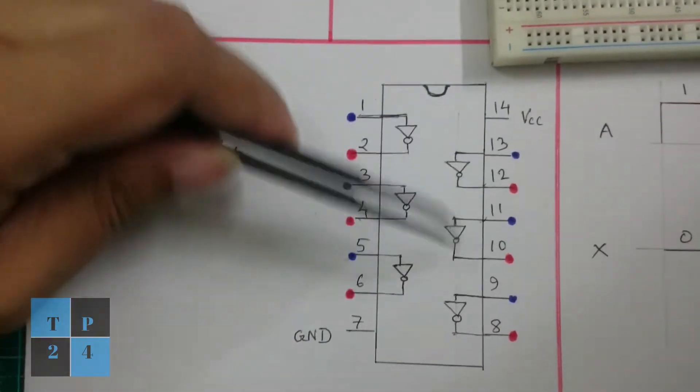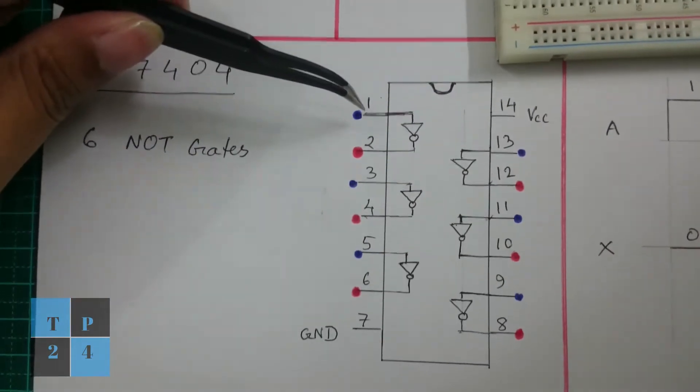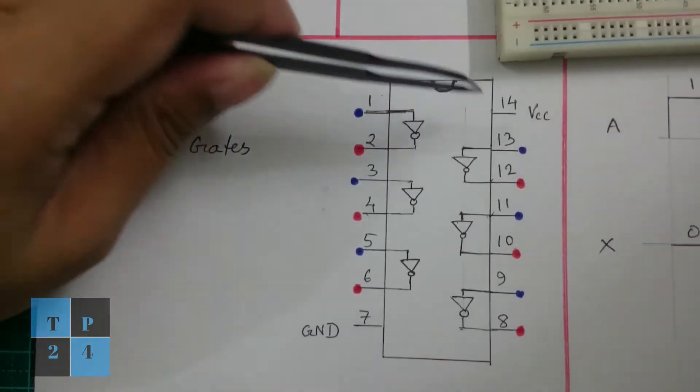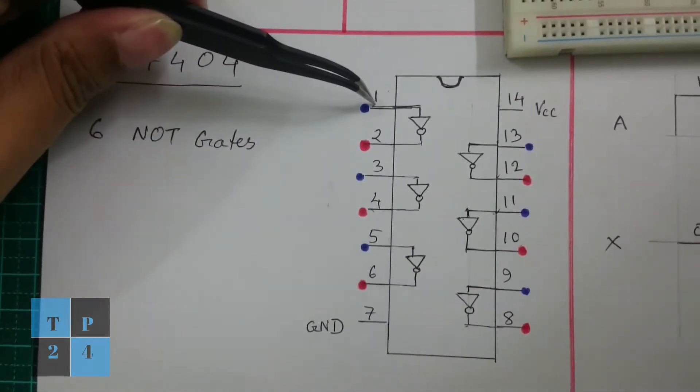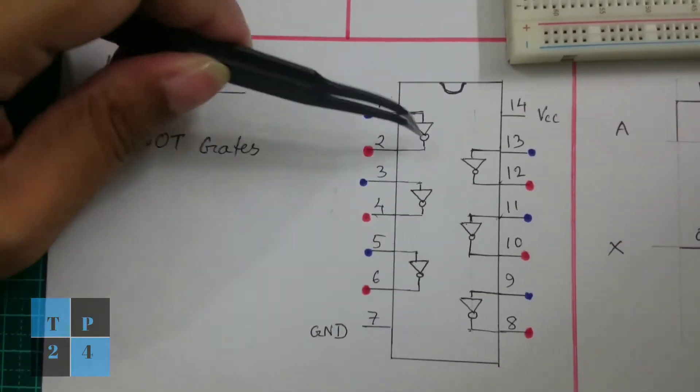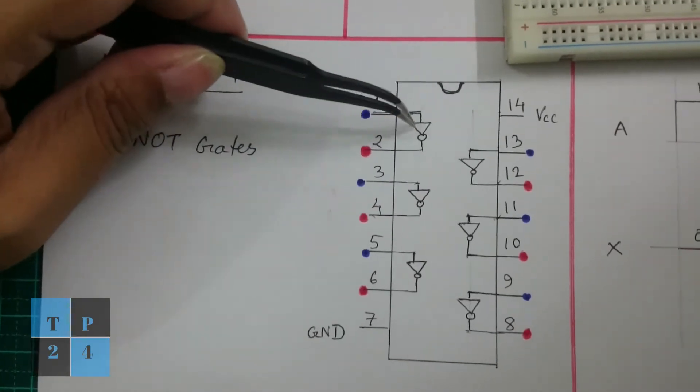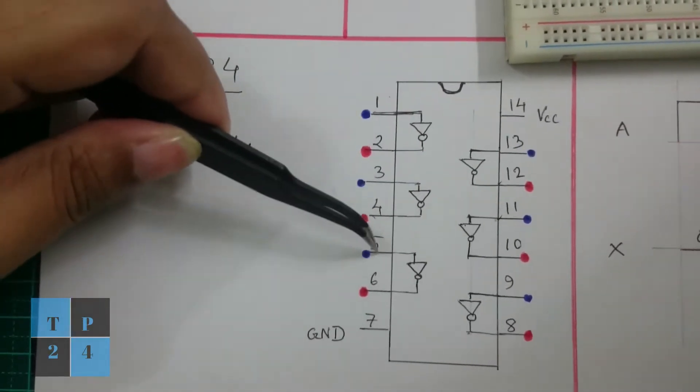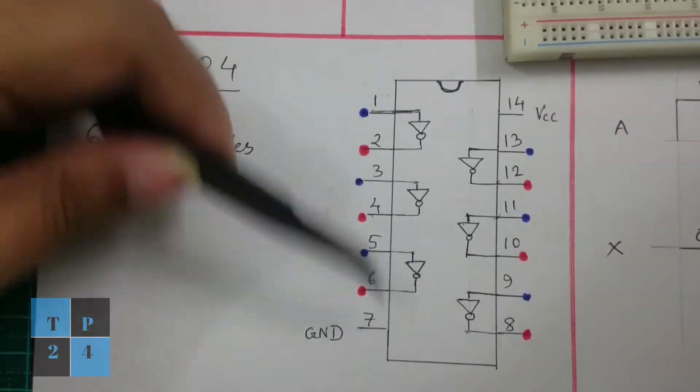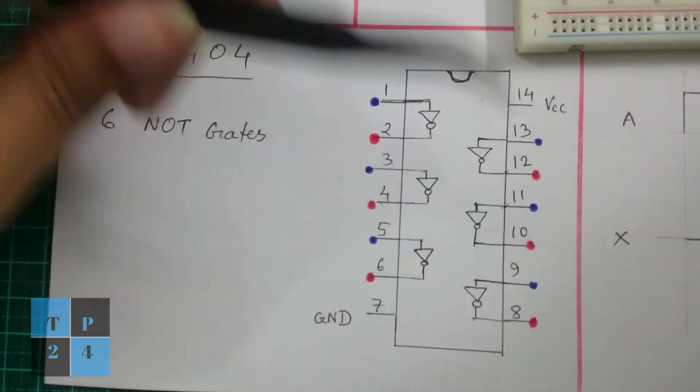Here is the pin diagram. Pin number 14 is the VCC and pin number 7 is the ground. Pin 1 is the input of the first inverter and 2 is the output. Pin 3 is the input and 4 is the output. Pin 5 is the input and 6 is the output of these inverters, and this continues in this way.